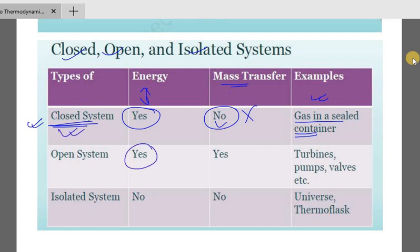Open system allows both energy and mass transfer — open to energy and mass. Examples include turbines, pumps, or valves. Next, isolated system: neither energy nor mass transfer occurs.